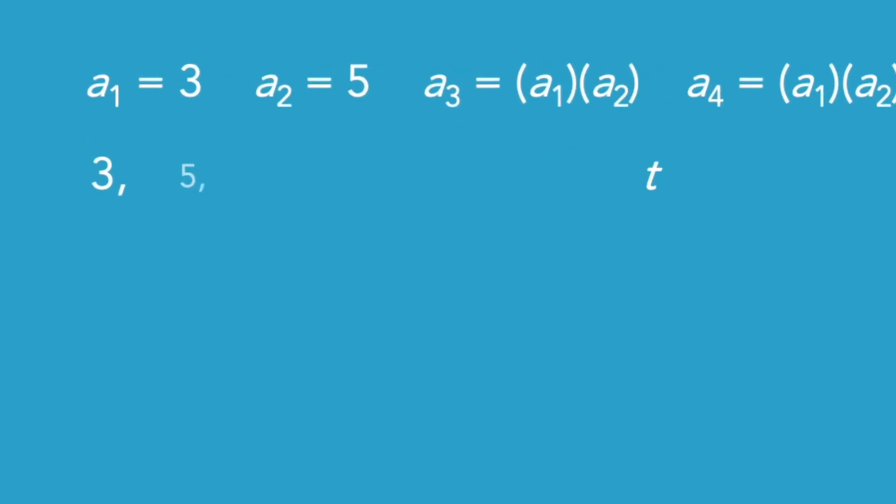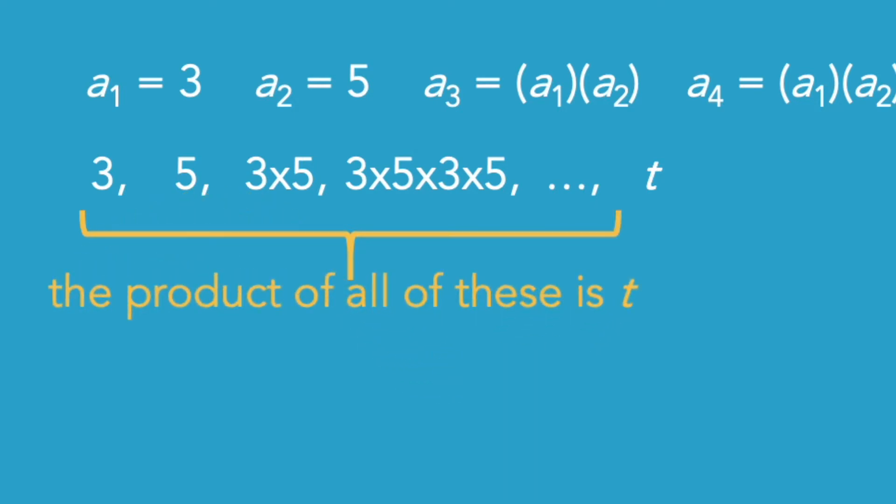t itself is also the product of all of the numbers that came before it. So if I were to look at the entire set up to t but excluding t, so stopping just before t, that whole thing has a product of t because that's why t is t—because it's the product of all the numbers before it.